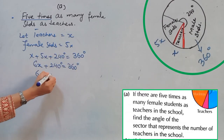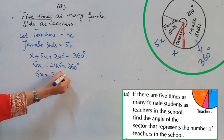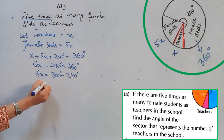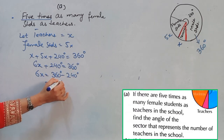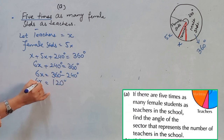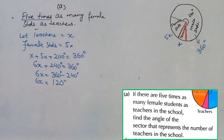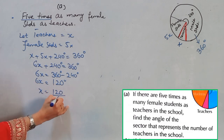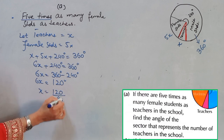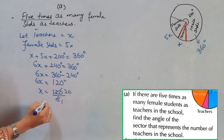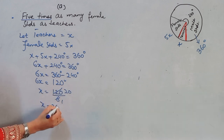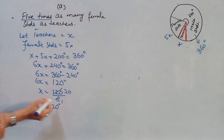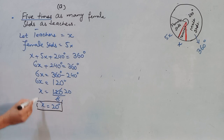So we have 5x plus x equals 6x. Now, to eliminate 240, we shift it to the right side by subtracting, and you will get 6x equals 120. To find x, we divide by 6, which gives x equals 20. So the angle of sector representing teachers is 20 degrees.